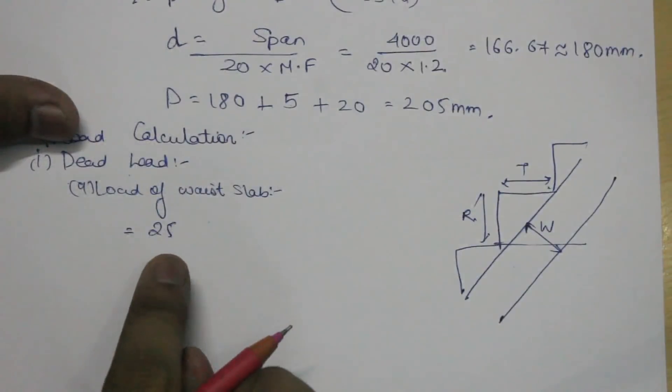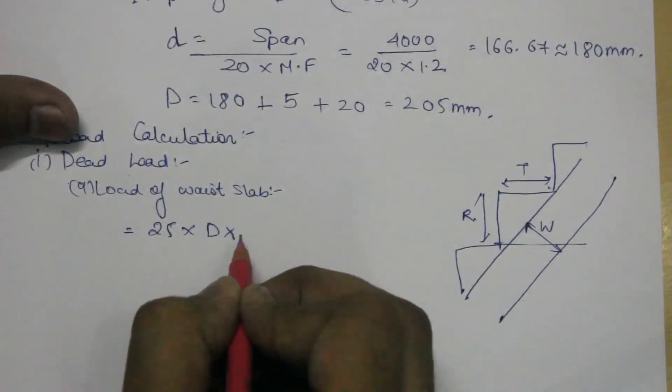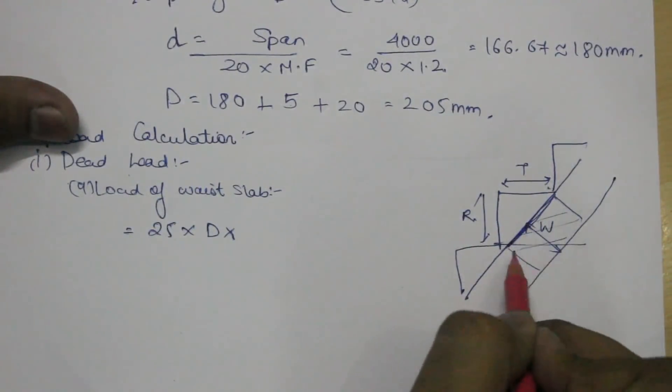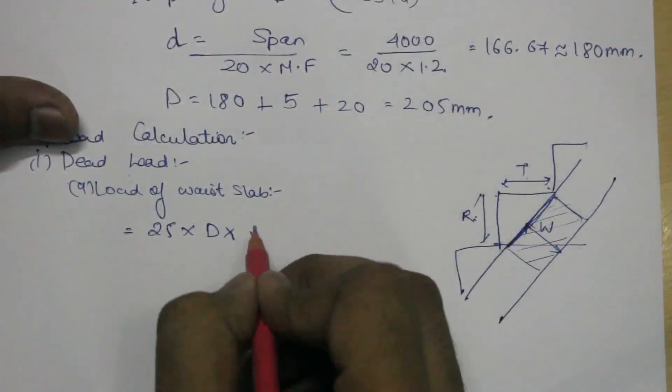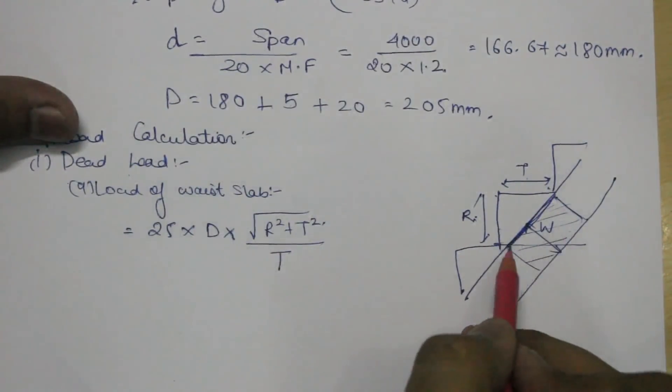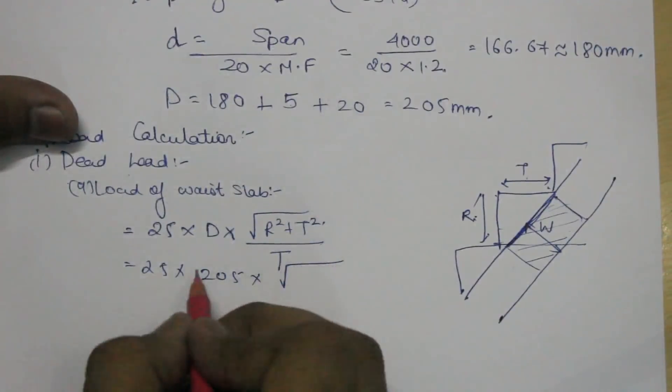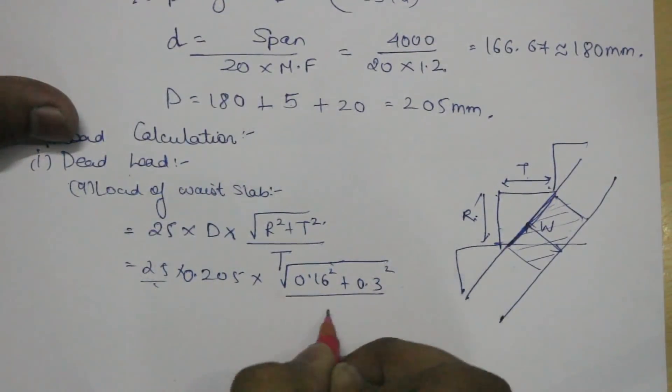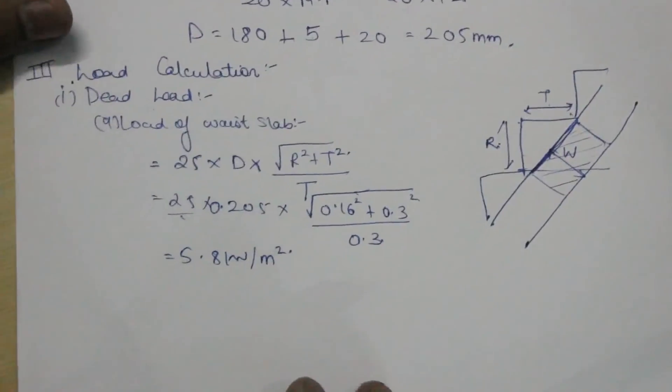For the calculation of load of waist slab, we will multiply the density of concrete, that is 25, by the area of the waist slab cross-sectional area which is depth multiplied by this part. This is w, that is, d multiplied by this portion which is under root of r square plus t square. We will divide it by t again because we want it to be acting horizontally. So 25 multiplied by 0.205 multiplied by under root of 0.16 square plus 0.3 square upon 0.3, we get 5.8 kilonewton per meter square.